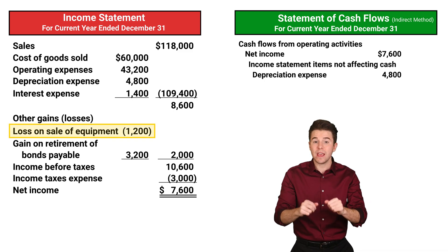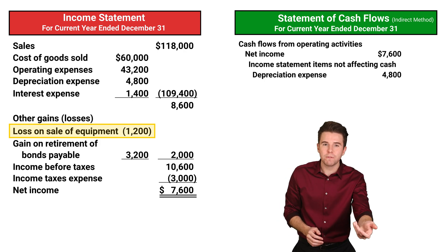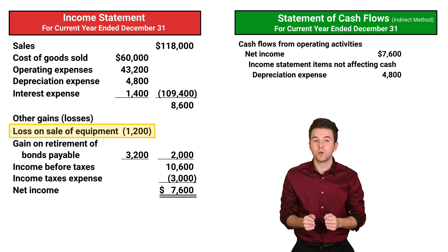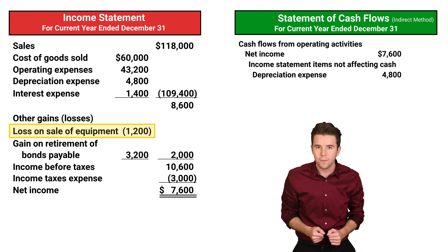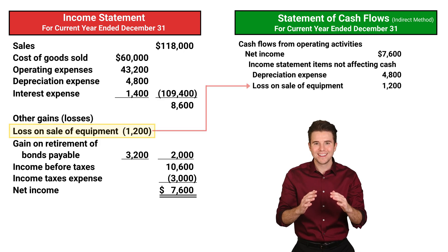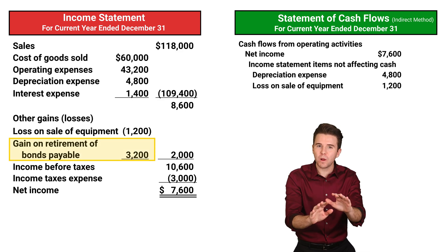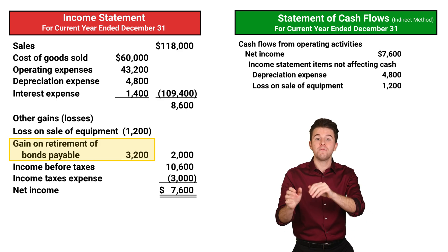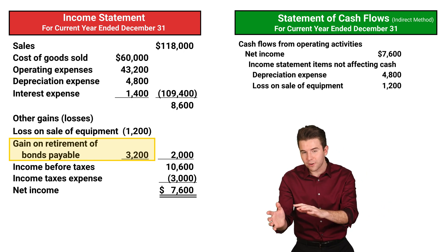Therefore, we add this expense back in to net income. Next, we see that we have a loss from the sale of equipment. This loss does not represent a cash outflow in the operating activity section. The cash flow from the sale of the equipment is actually reported in the investing activity section, which we cover in another video. This gain does not represent a cash inflow in the operating activity section. The cash flow from the retirement of bonds payable is reported in the financing activity section, which is covered in another video.